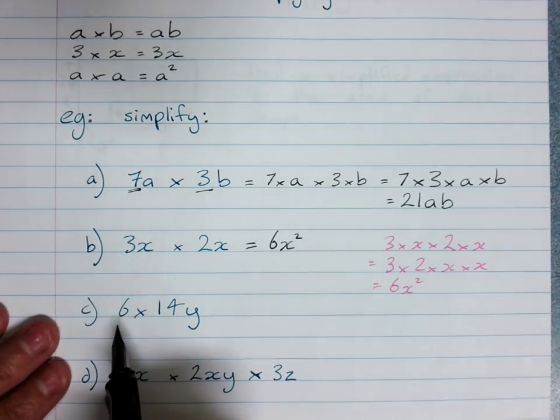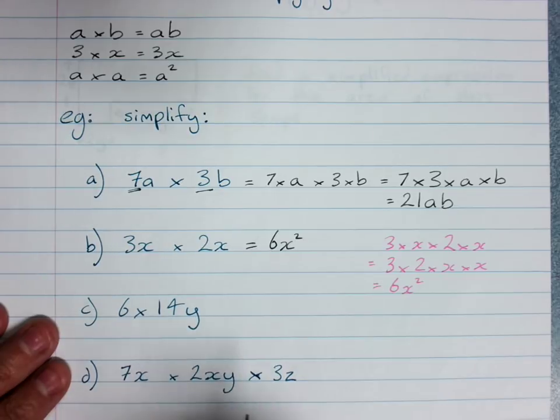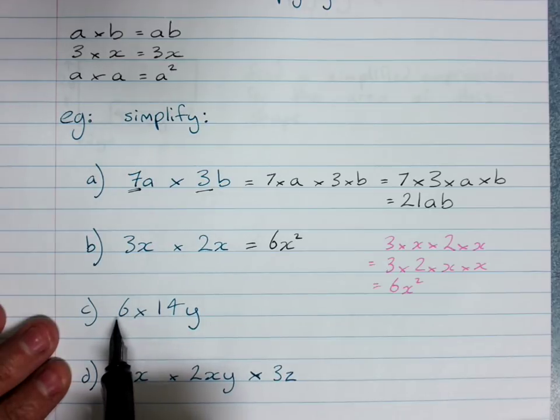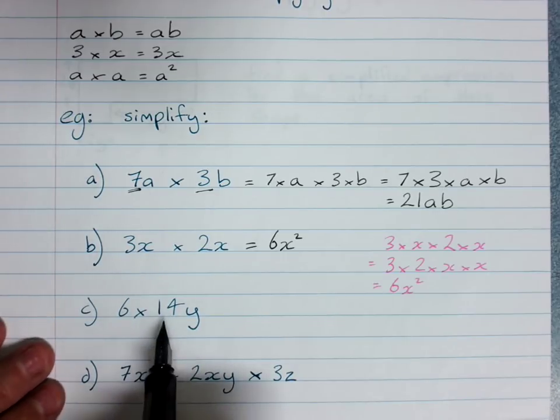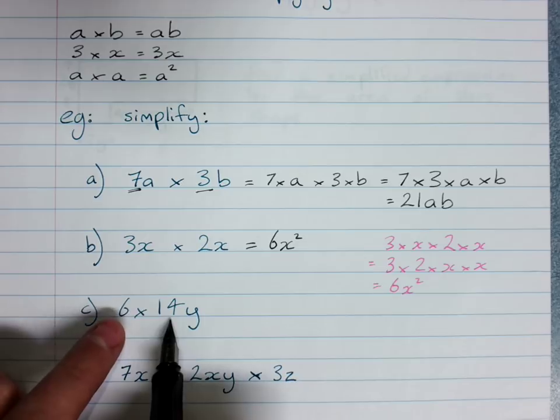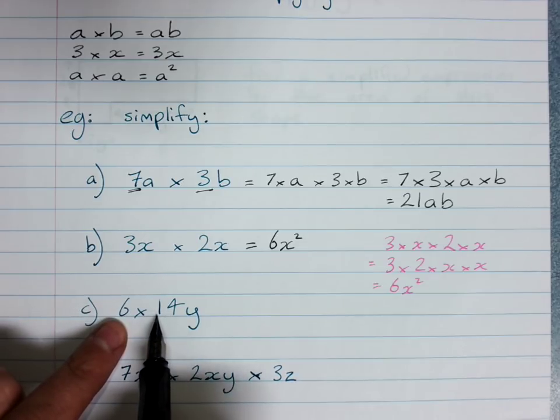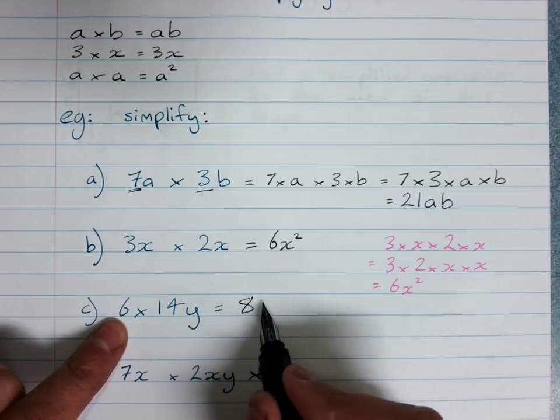Now this is a whole number times an algebraic term, 6 lots of 14y, but we still multiply our constant here by our coefficient. Now 6 times 14 might be a bit tricky: 6 times 4 is 24, 6 times 10 would be 60, so that will be 84y.